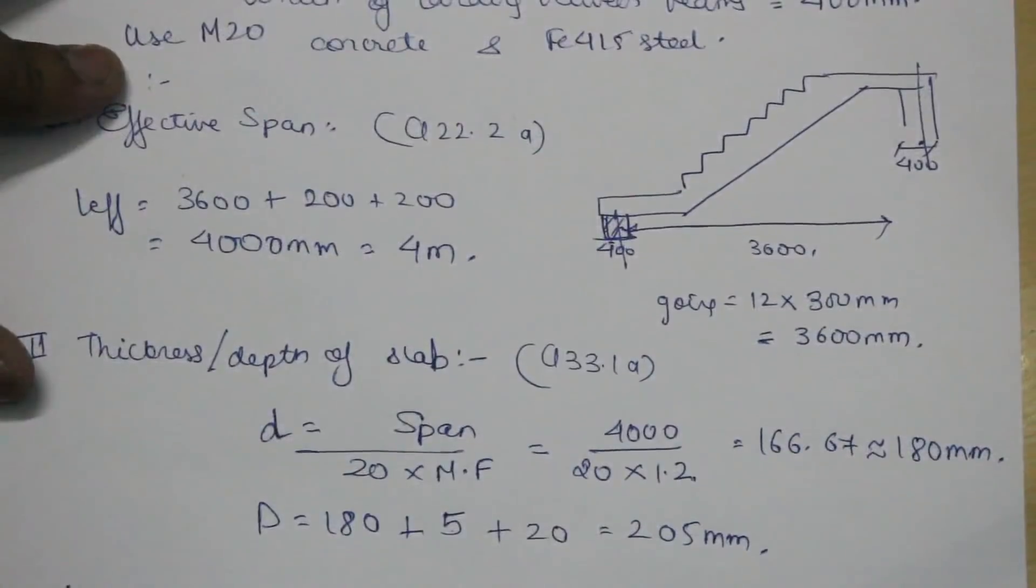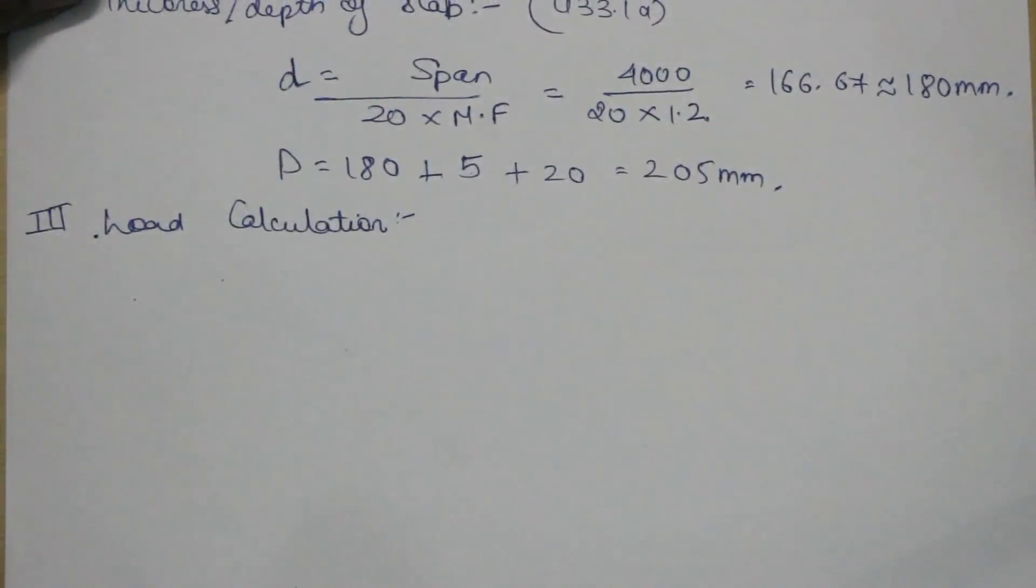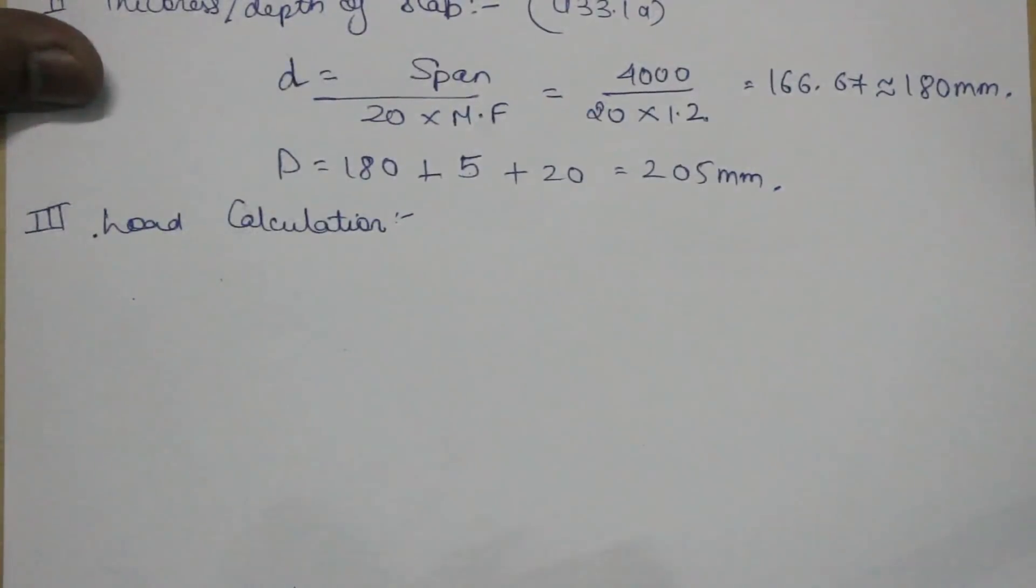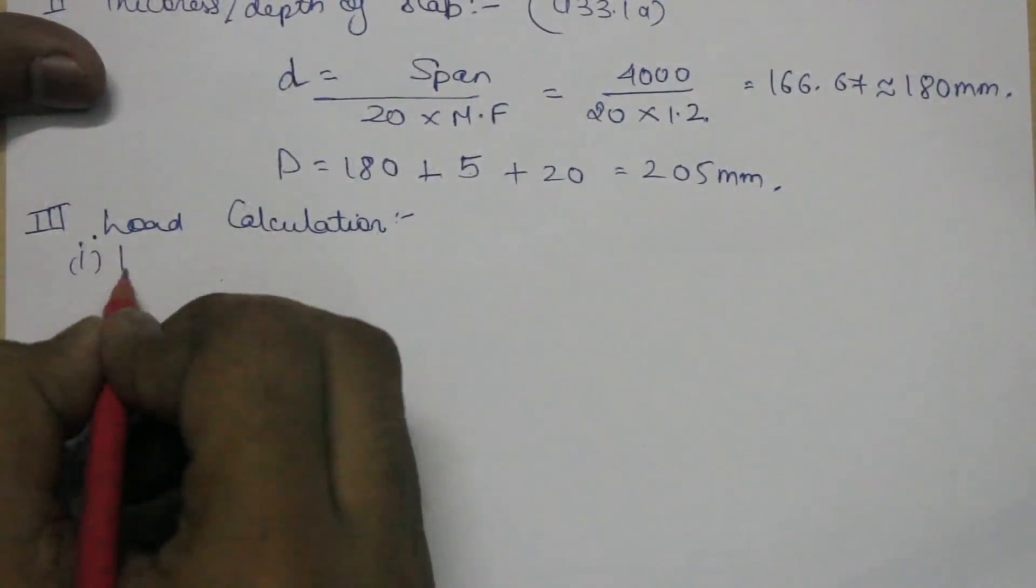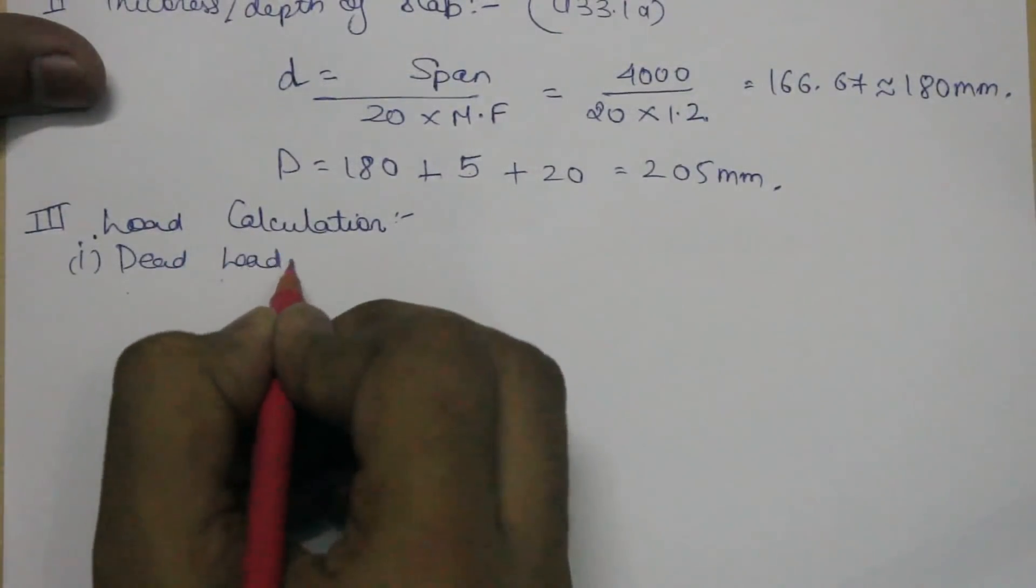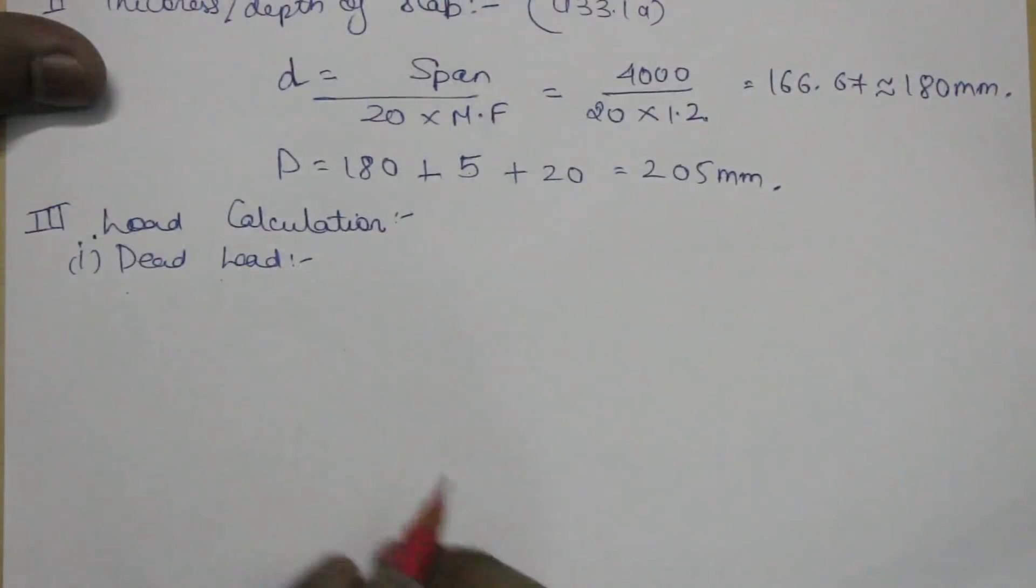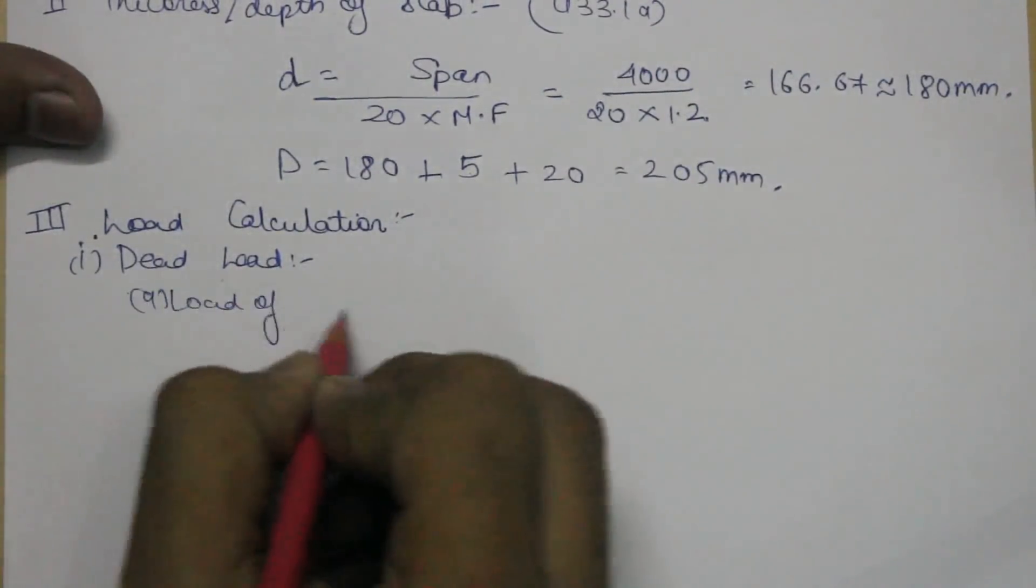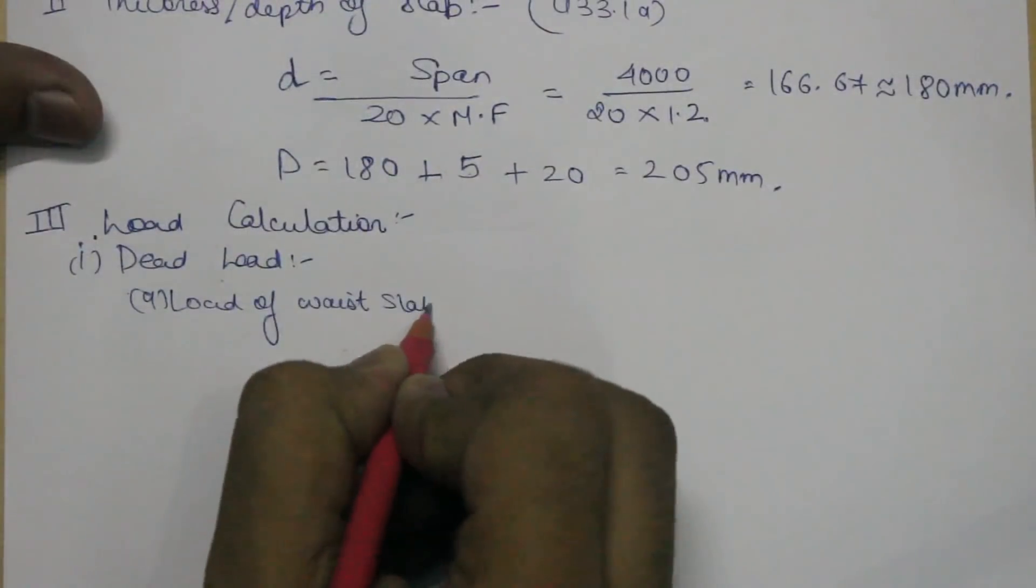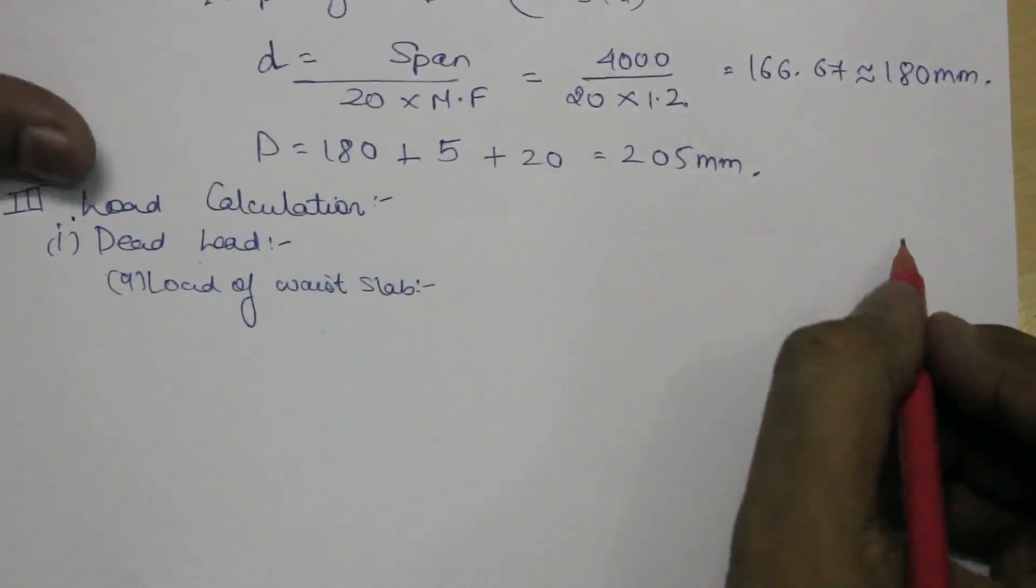The third step would be to calculate the load acting on the slab. There will be two types of load: dead load and live load. In the dead load there will be three types of load: the first one is floor finish, the second one is the load of the waste slab, and the third one is the load of one single step. So first part is dead load calculation.